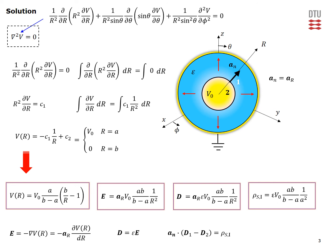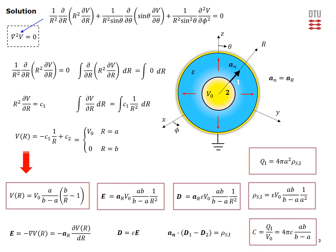Since the surface charge density is uniformly distributed over the inner conductor's surface, we multiply it by the surface area 4πA² to get the total charge in Coulombs induced on that surface. Taking this total charge and dividing by the assumed potential difference — the voltage between the inner and outer conductors — we arrive at the familiar expression for the capacitance of a spherical capacitor.